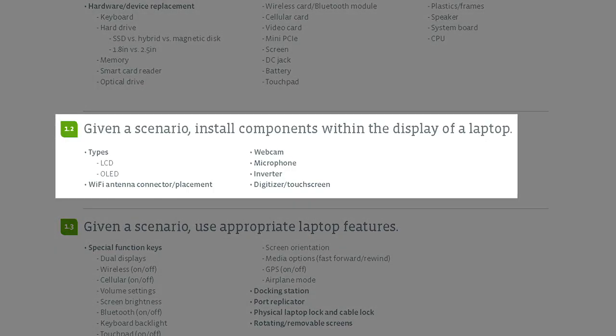For example, here on 1.2 it says: given a scenario, install components within the display of a laptop. It lists types like LCD and OLED, putting in a Wi-Fi antenna, installing a webcam, a microphone, an inverter, and a digitizer touchscreen. They're expecting you to look at a laptop display, open it up, and recognize the function of all these different devices and some of the issues that come into play. When you watch my videos, we're definitely going to be taking a laptop, yanking the monitor off, and talking about all the different wires.